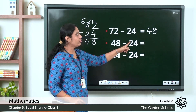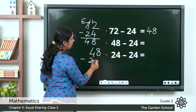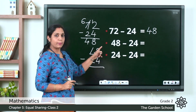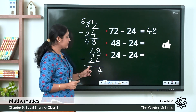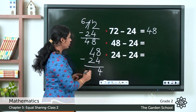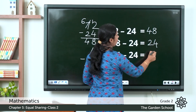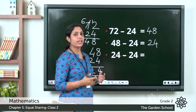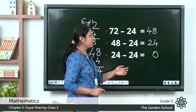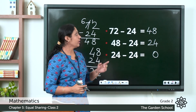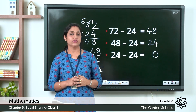Now subtract twenty-four from forty-eight: eight minus four is four, four minus two is two, so forty-eight minus twenty-four is twenty-four. Then twenty-four minus twenty-four is zero. We repeatedly subtracted three times: one, two, three. So seventy-two divided by twenty-four is equal to three — each child gets three books.